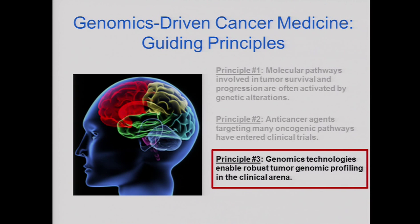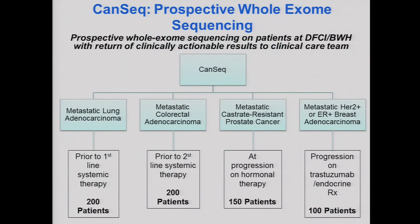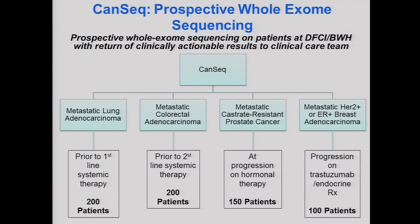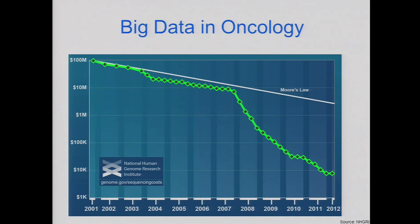The third point is that we now have the ability in the clinical arena to do robust and reasonably comprehensive genomic profiling. NHGRI was forward-looking in early 2011 when they put out a request for applications about clinical sequencing exploratory research — the CSER program. We were fortunate to be awarded one of the first grants in cancer, and we now have a project ongoing at Dana-Farber together with the Broad Institute that we call CAN-Seq for cancer sequencing. The project is focusing on lung and colon cancer but has expanded to other cancers. The study performs whole exome sequencing and figures out how to interpret the entire exome and make it palatable to busy clinicians.